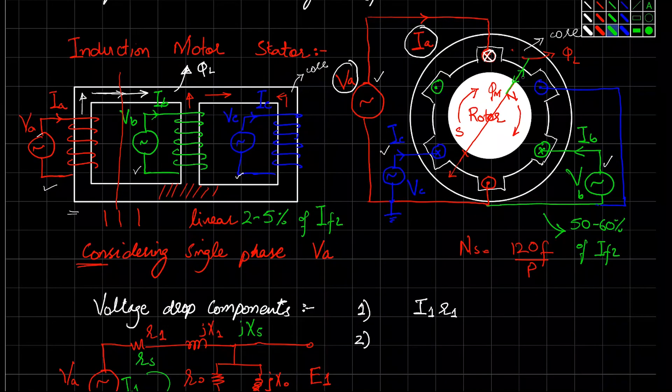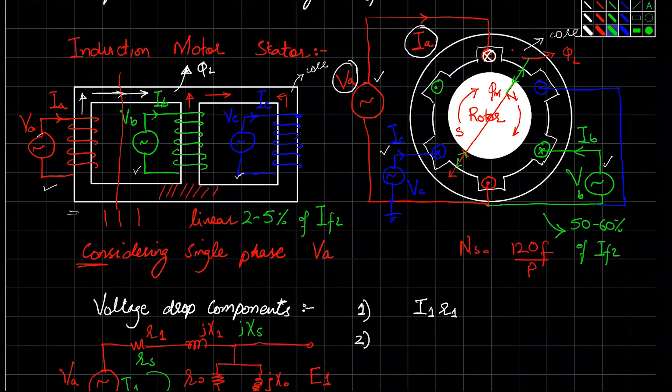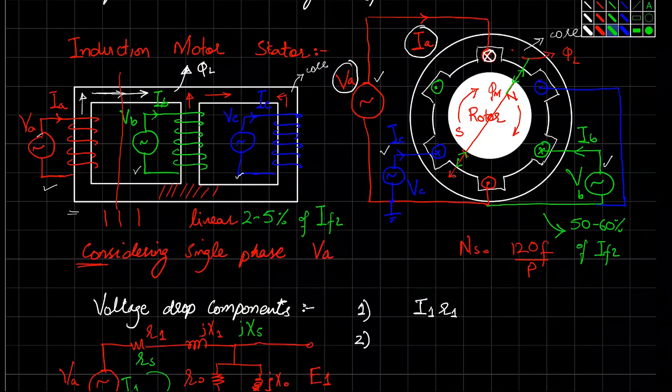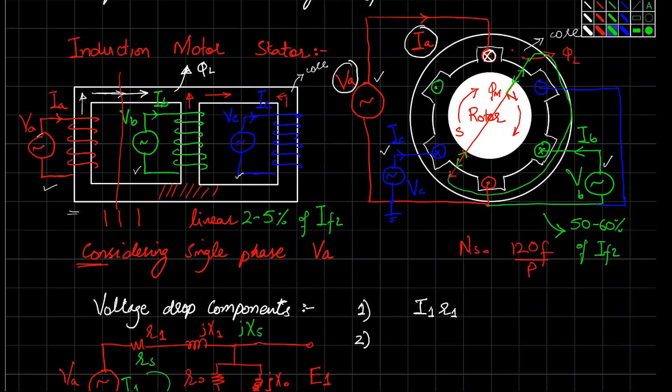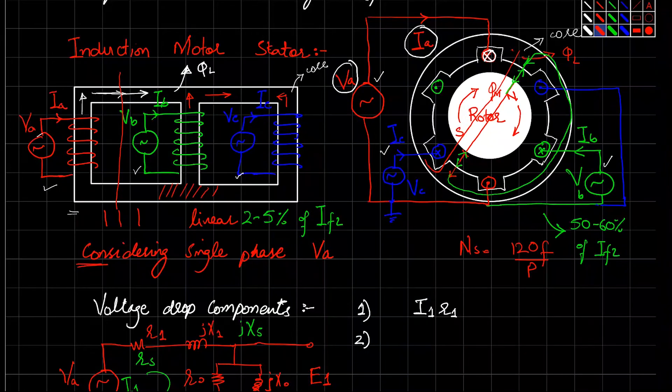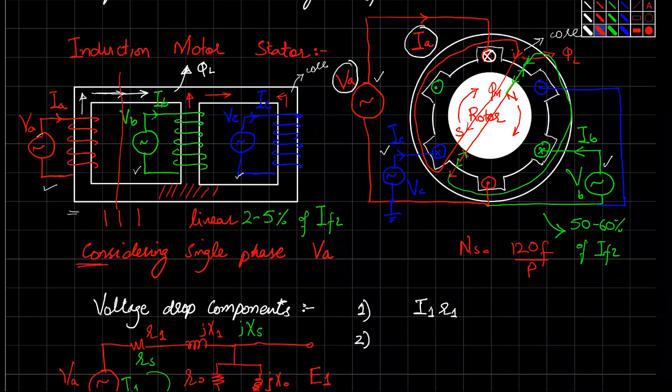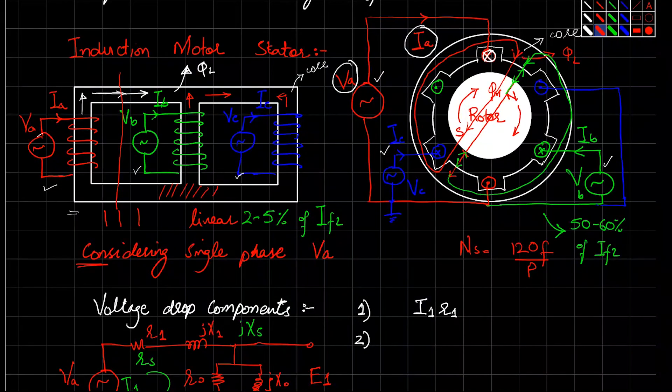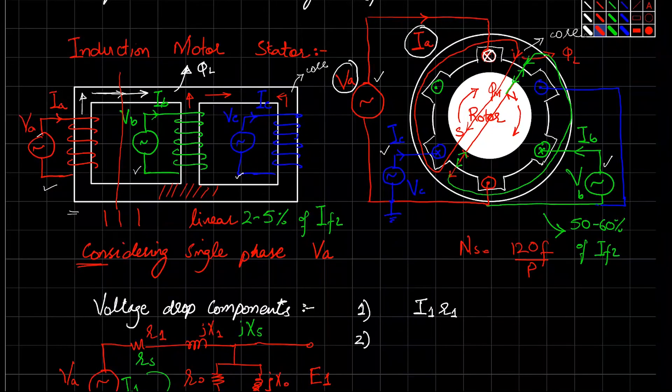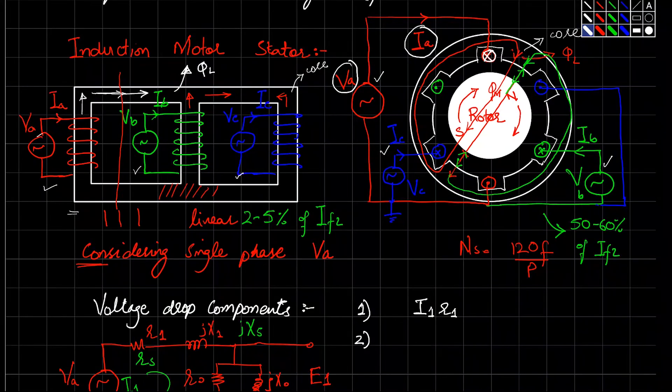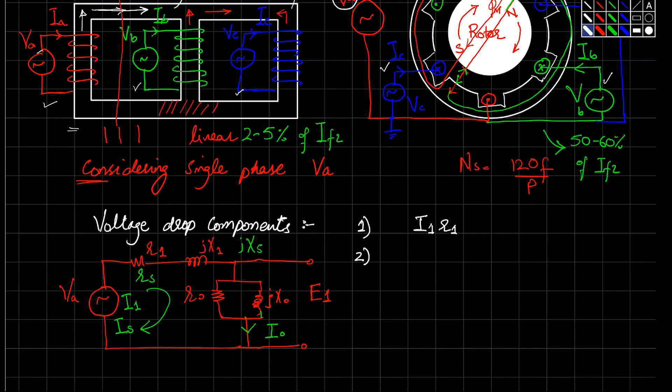This is because the flux passes through the air gap and enters the rotor. This air gap means the flux needs more electric power to pass through. The flux completes its path through the core and moves back in this direction. It needs more amount of energy because the flux must pass through the air gap.